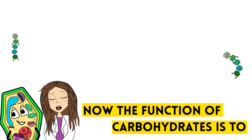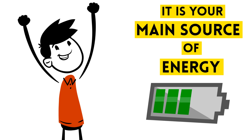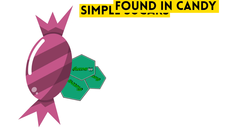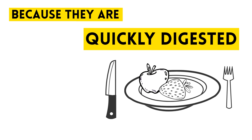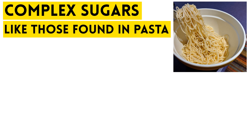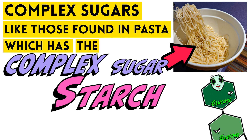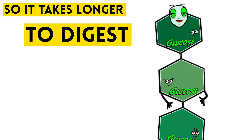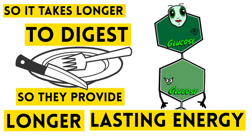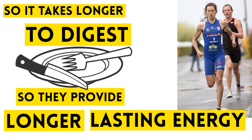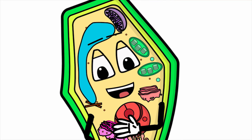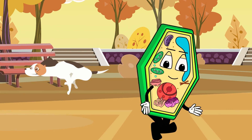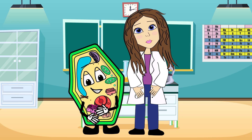The function of carbohydrates is to provide you energy — it is your main source of energy. Simple sugars found in candy provide you short bursts of energy because they are quickly digested. Complex sugars, like those found in pasta — which has the complex sugar starch — take longer to break down, so they provide longer-lasting energy. That is why many marathon runners eat a lot of pasta before a big race; they need longer-lasting energy.